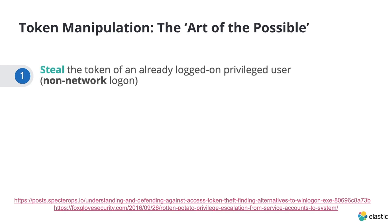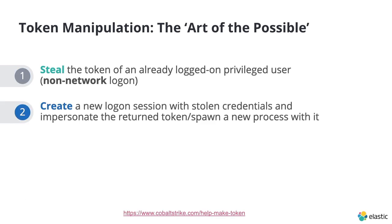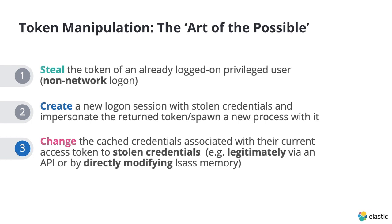The attacker effectively has three options. First, they can steal the token of an already logged-on privileged user — because they want to move laterally, they need cached credentials, so a non-network logon. With that token, they can impersonate or spawn a process and move laterally using those cached credentials. If a privileged user isn't already logged in, they need to find credentials, and then create a new logon session with those stolen credentials and impersonate the returned token. Their last option is to change the cached credentials associated with their current logged-on user to stolen credentials — either legitimately through an API or illegitimately by directly modifying LSAS memory.